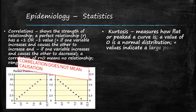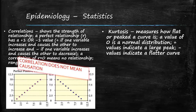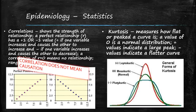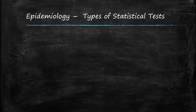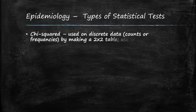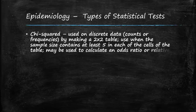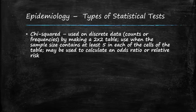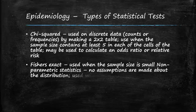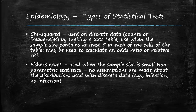Kurtosis measures how flat or peaked a curve is. A value of zero is a normal distribution. A positive kurtosis (leptokurtic) indicates a larger peak; a negative kurtosis indicates a flatter curve. The chi-squared test is used on discrete data (counts or frequencies) using a two-by-two table, with at least five observations in each cell; it may calculate an odds ratio or relative risk. Fisher's exact test is used with small sample sizes — non-parametric, with no assumptions about distribution.